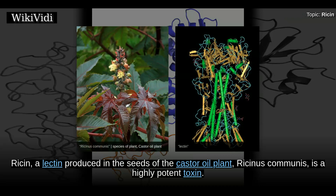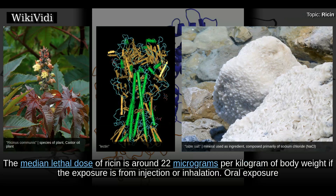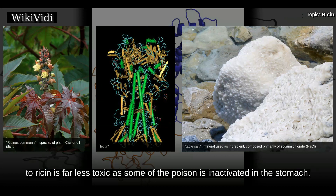Ricin, a lectin produced in the seeds of the castor oil plant Ricinus communis, is a highly potent toxin. A dose of purified ricin powder the size of a few grains of table salt can kill an adult human. The median lethal dose of ricin is around 22 micrograms per kilogram of body weight if the exposure is from injection or inhalation. Oral exposure to ricin is far less toxic, as some of the poison is inactivated in the stomach.